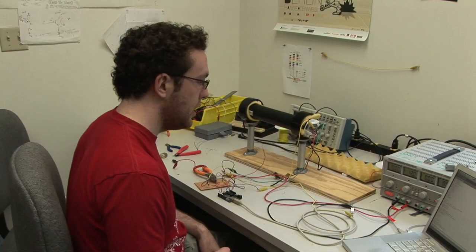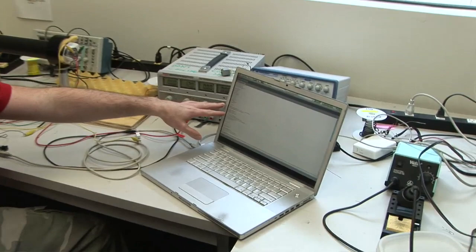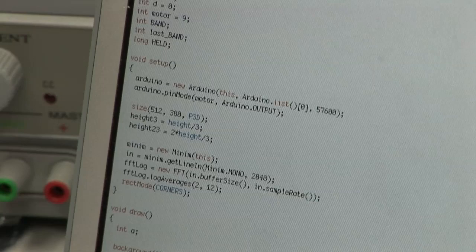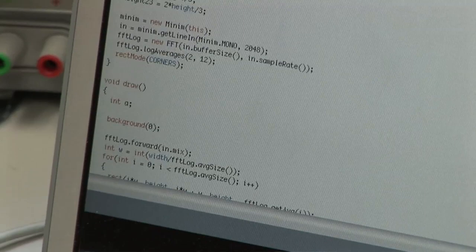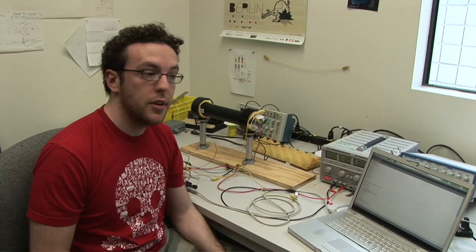I'm using the internal microphone in my laptop here as my audio input. I'm then using a program called Processing, which is based on Arduino. And Processing is running my fast Fourier transform, that's FFT, and generating frequency bands, and then I'm measuring the average amplitude of specific frequency bands that I determined by whistling and measuring the frequency in an oscilloscope.